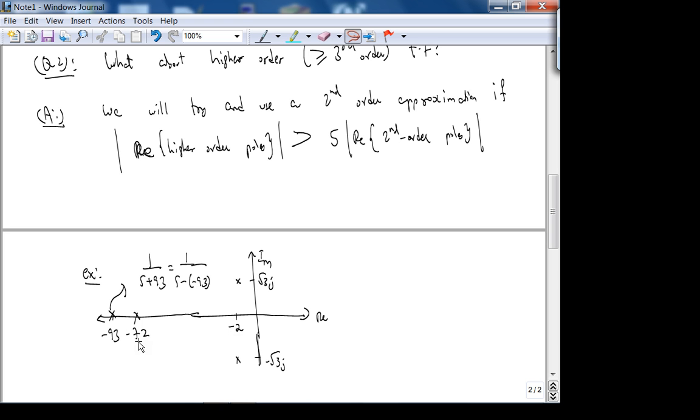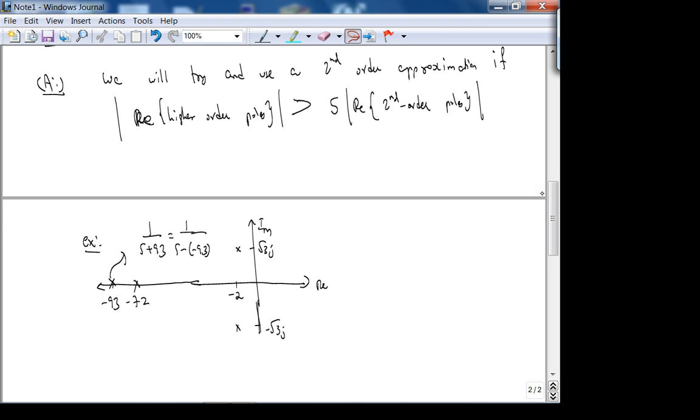The magnitude of this is 93, which is five times greater than the magnitude of the real part, which is 2. So five times 2 is 10. This five times is just a rule of thumb that control engineers use. This second-order approximation you will study in more detail in 3720.